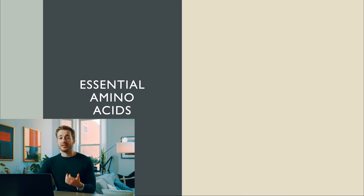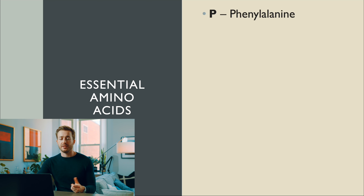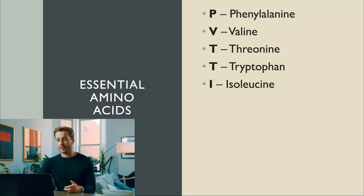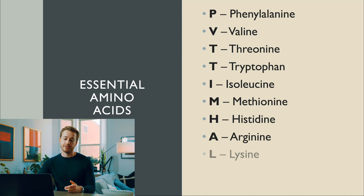The next mnemonic is PVT TIM HALL — the essential amino acids your body can't produce and must get from the environment: phenylalanine, valine, threonine, tryptophan, isoleucine, methionine, histidine, arginine, lysine, and leucine. Try saying that 20 times fast.